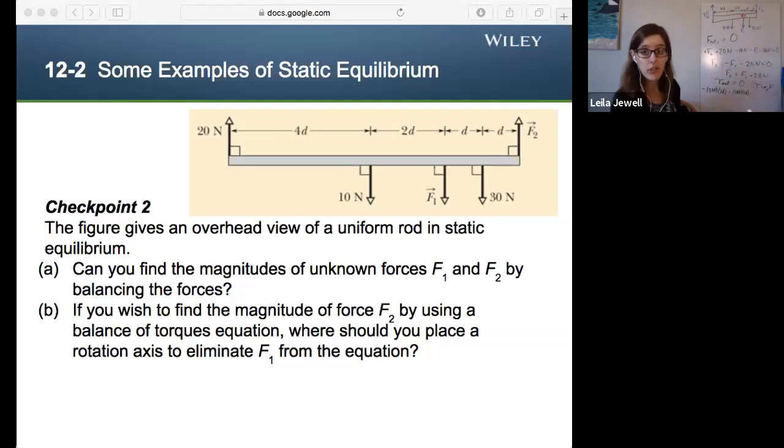All right. F1 is at a distance of zero. I could still write that in. Plus F1 times zero. Cool. So that doesn't do anything. Continuing on, we have 30 newtons at a distance of D from our axis of rotation. I don't want to get too far in the corner. So I'm going to come right here. And that 30 newtons is causing a clockwise rotation. So that's a negative torque. You need to keep that sign in there. And then finally, we have F2. And that is at a distance of 2d from the axis of rotation. And it is causing a counterclockwise rotation.